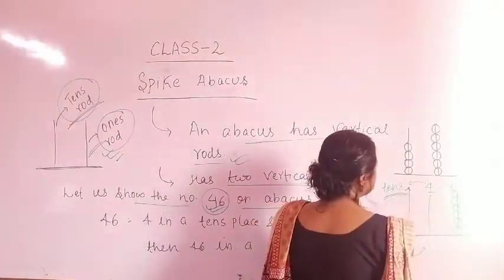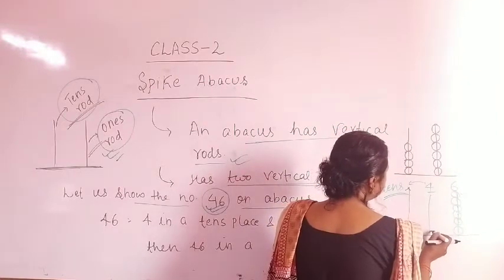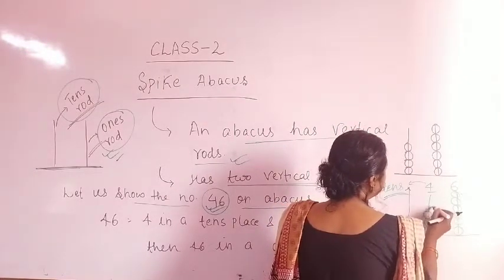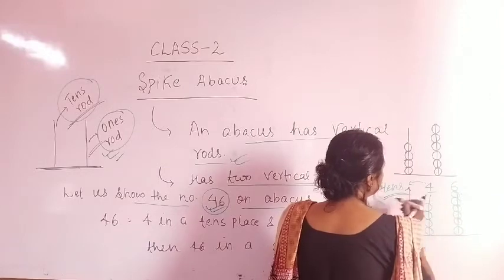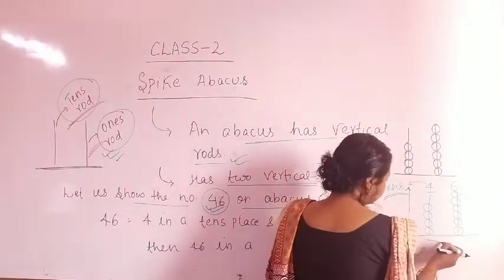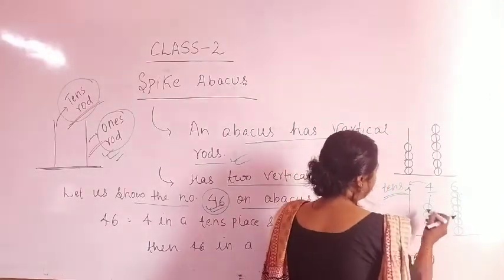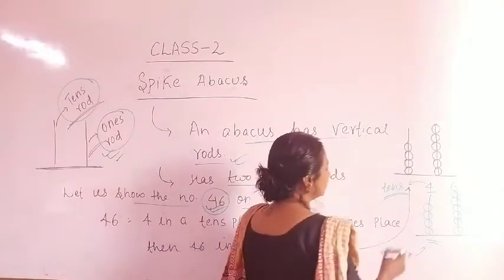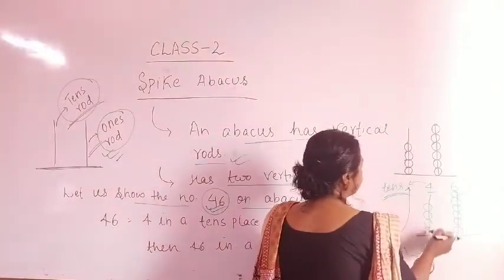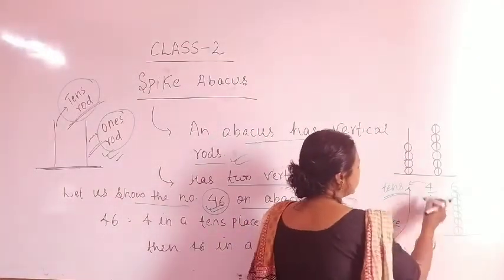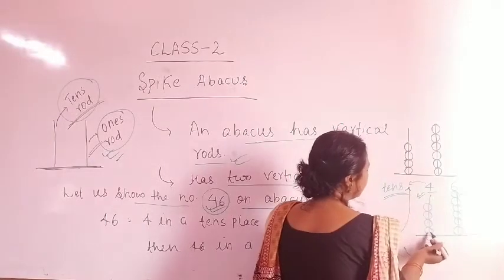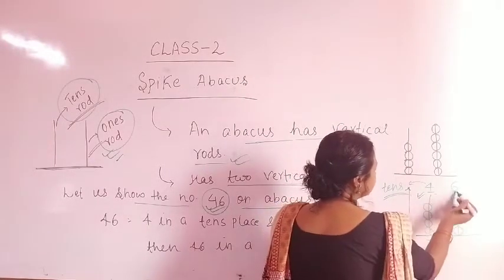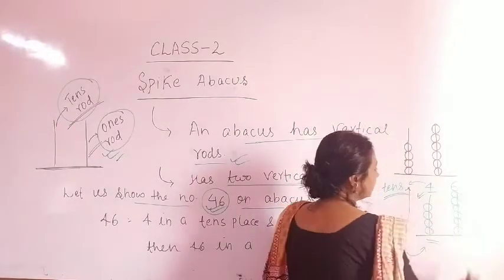Then 4 in the 10's place. We write 1, 2, 3, and 4 — drawing 4 beads on the 2nd rod. So 4 in the 10's place with 4 beads on one vertical rod and 6 beads on the other vertical rod.